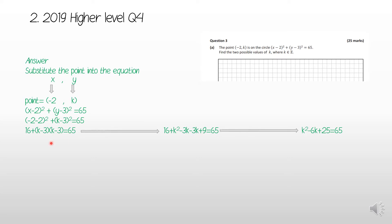Tidying things up: (−2 − 2)² = 16. Then (k − 3)² means (k − 3) multiplied by (k − 3), because every time you square something you multiply it by itself. So we have 16 + (k − 3)(k − 3) = 65.